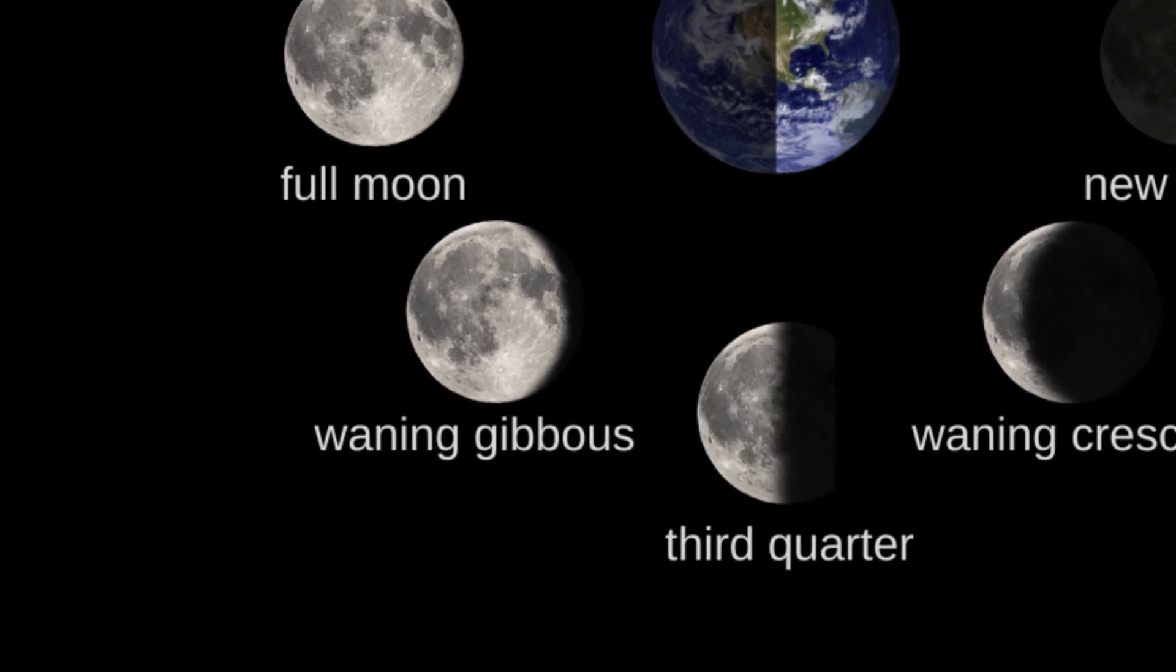Waning gibbous. After the full moon, the light begins to decrease. The waning gibbous phase shows more than half, but less than the whole moon illuminated, with the light now fading from the left side.